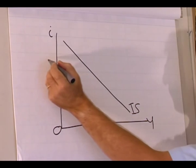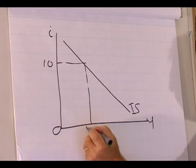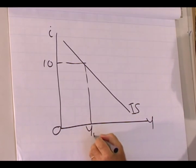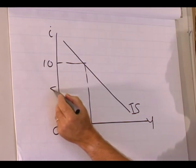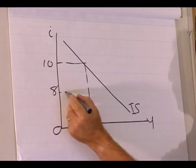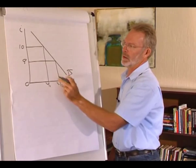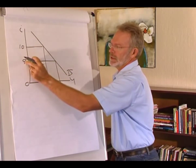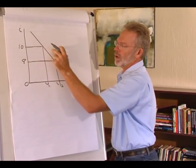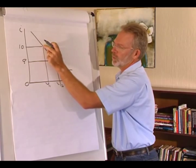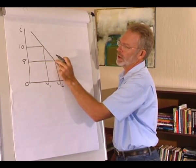At a given interest rate, say 10%, the goods market is in equilibrium at level of production Y1. If we change the interest rate to 8%, the goods market is in equilibrium at Y2. A change in the interest rate causes a movement along the IS curve — we move from this point on the IS curve to this point on the IS curve.